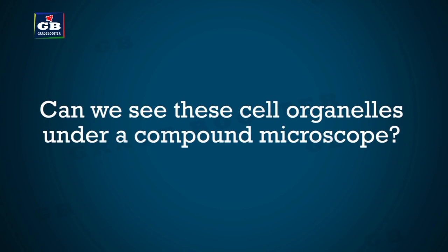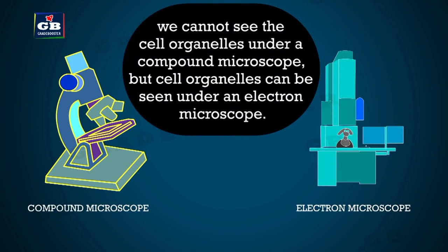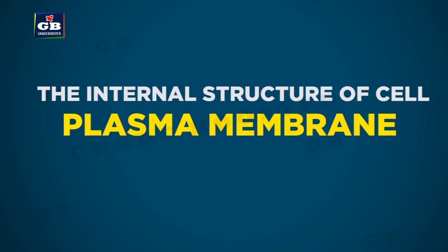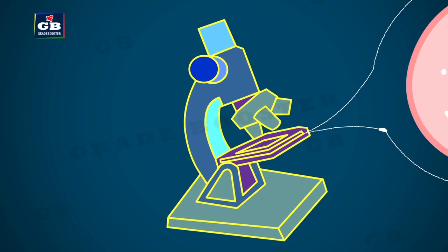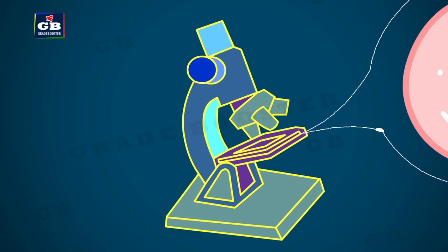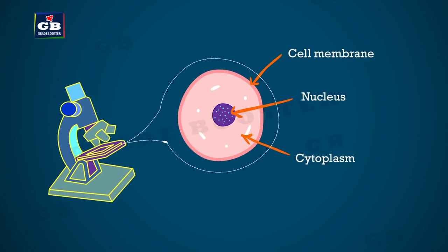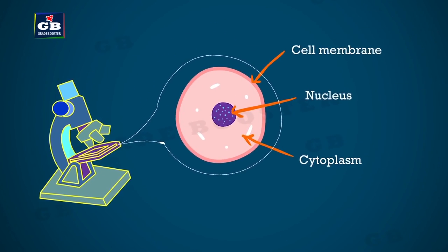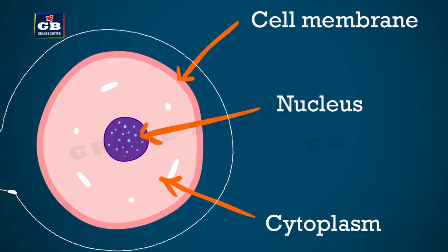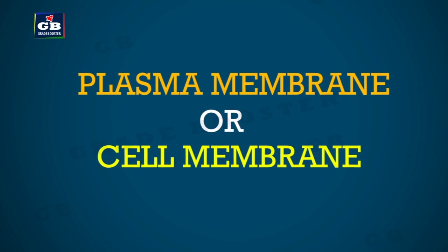We cannot see cell organelles under a compound microscope; they can only be seen under an electron microscope. If we observe a cell under a compound microscope, we find three important parts: the plasma membrane, the nucleus, and the cytoplasm.